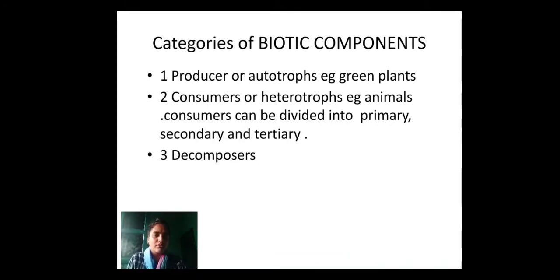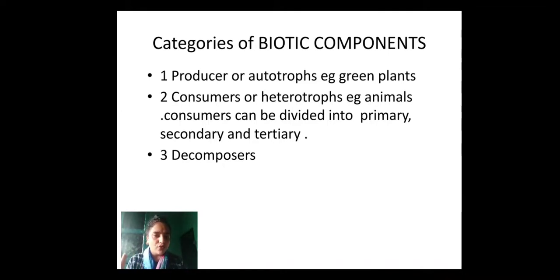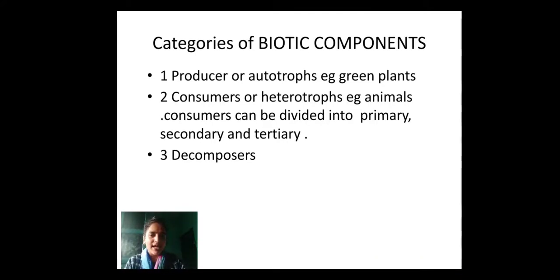Producers are the organisms which can prepare their own food. For example, green plants. They are also called autotrophs. Here, 'auto' means self and 'trophs' means to nourish. Since plants can nourish themselves, they are called autotrophs.